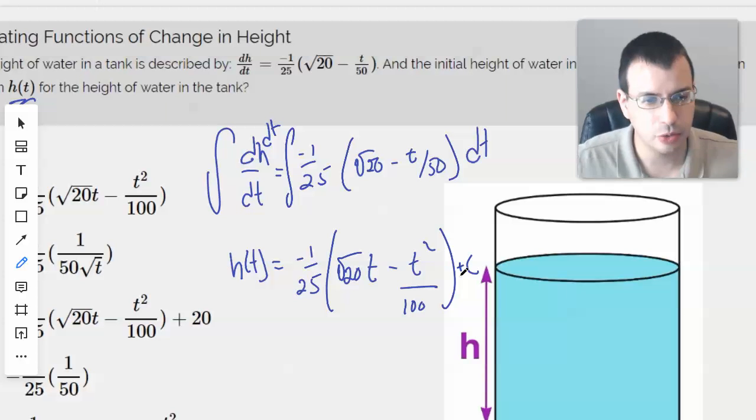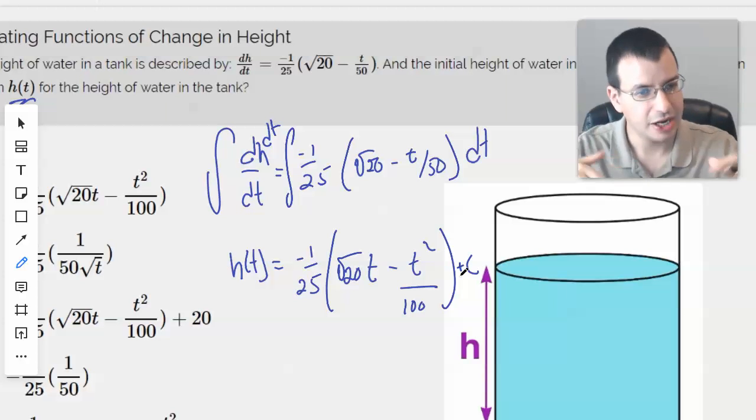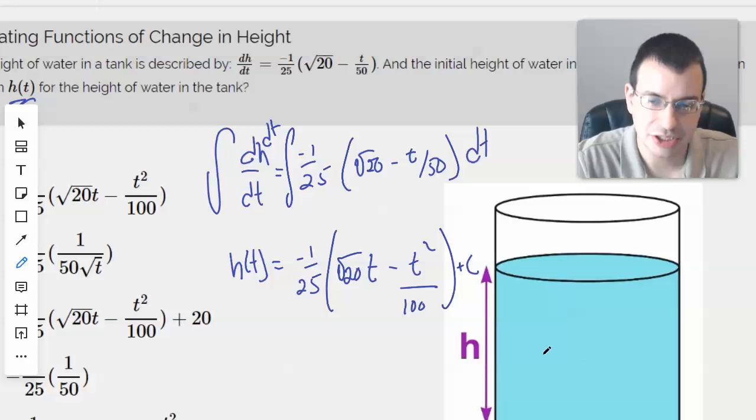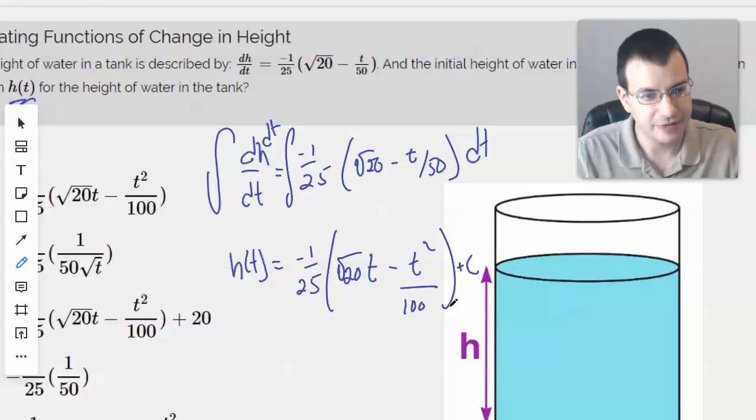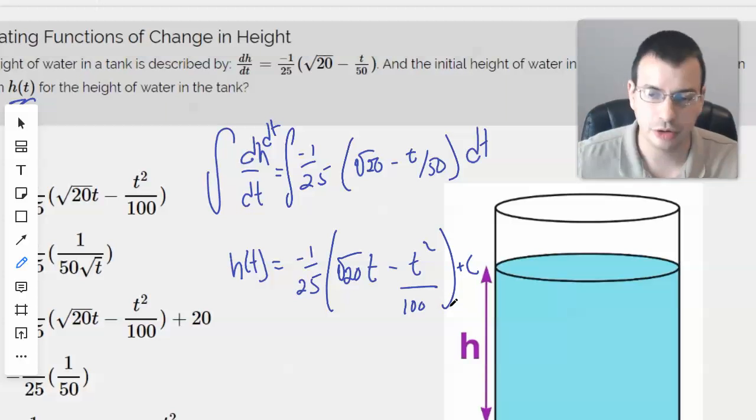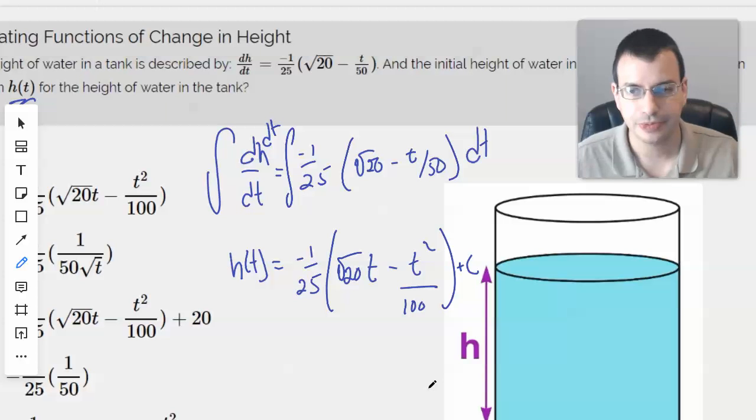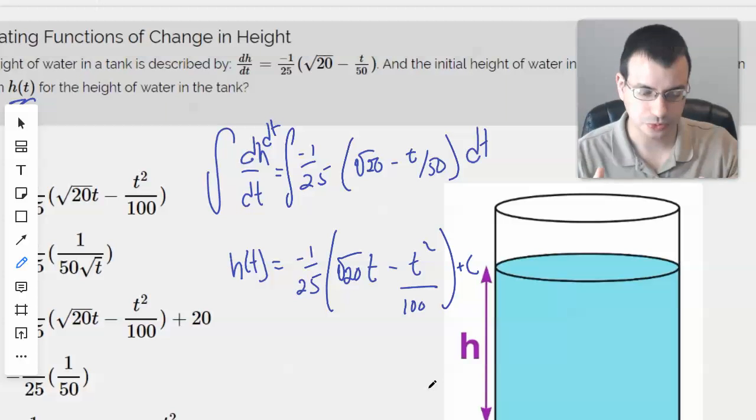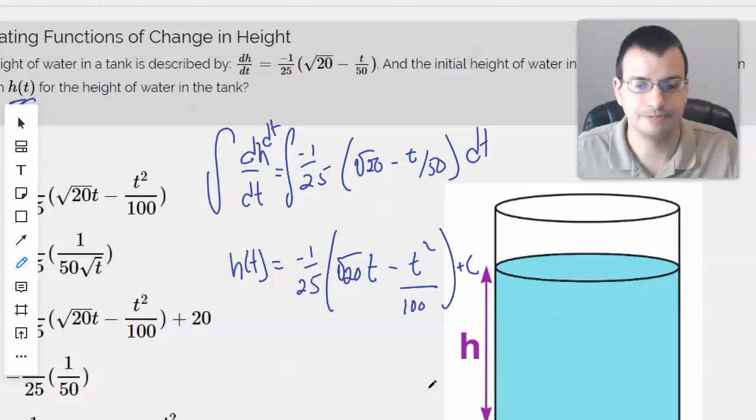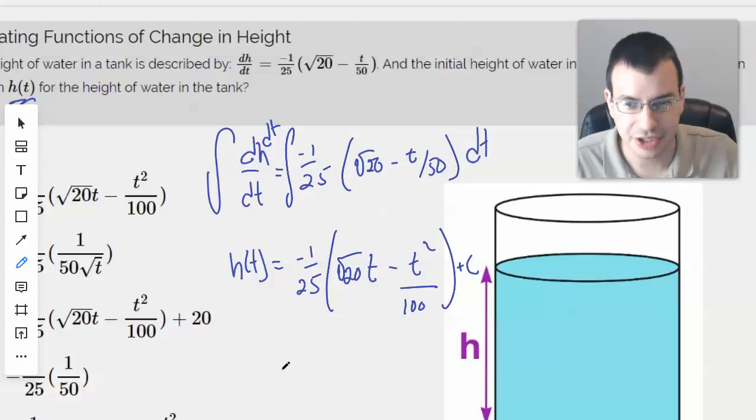And your thought might be, well, should the plus C be inside the brackets or outside the brackets? It doesn't matter. They'd just be off by a factor of 25, or negative 1 over 25. And so that'd just be another constant. So it's fine to leave it outside the bracket.